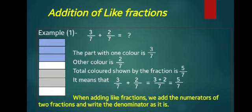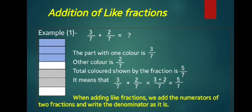The first topic is addition of like fractions. Example 1: the question is 3 upon 7 plus 2 upon 7. Let's understand the example by this figure. This strip is divided into 7 equal parts; the part with one color is 3 upon 7 and the other color is 2 upon 7. So, how many total colored parts shown by the fraction is 5 upon 7.